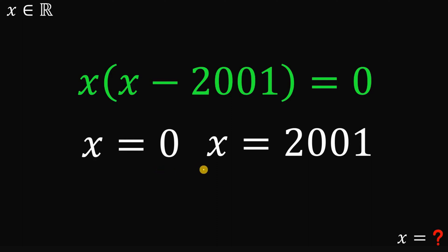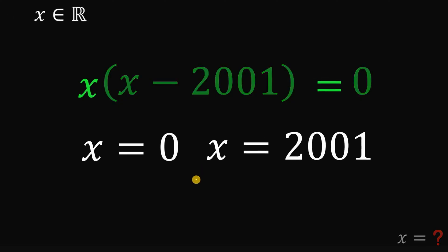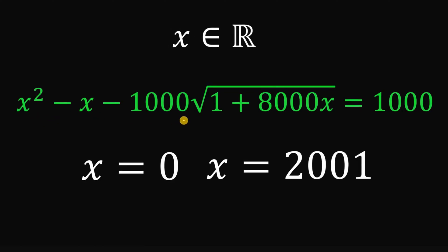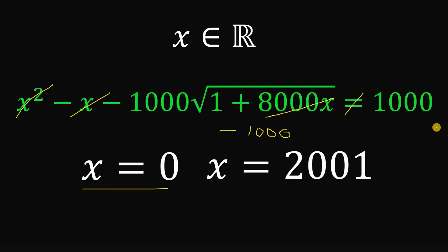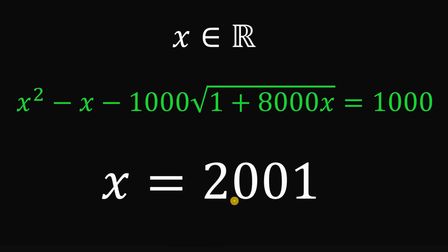However, our hint stated there is only one real value of x. Checking x equals 0 in the original equation: x squared becomes 0, negative x becomes 0, and 8,000x becomes 0, so the left-hand side equals negative 1,000, which does not equal positive 1,000. Therefore x equals 0 cannot be part of our solution. The only real value of x that satisfies the equation is x equals 2,001.